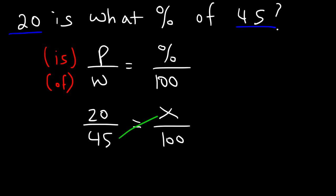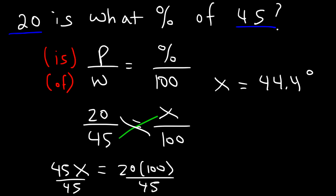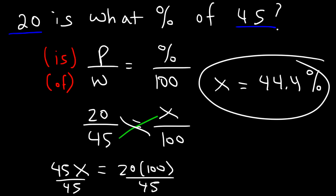45 times X is simply 45X, and 20 times 100 gives us 2000. Now let's divide both sides by 45. So X is going to be 2000 divided by 45, which is about 44.4. So that's the answer: 20 is 44.4% of 45.